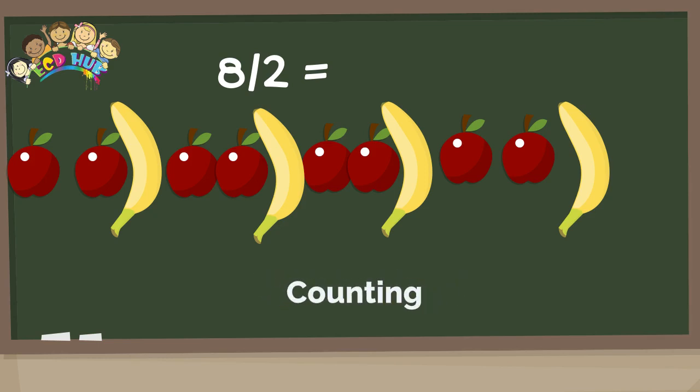Well done guys, next step is to count our bananas. Let's do it together: 1, 2, 3, and 4. Excellent. So guys, 8 divided by 2 is 4.